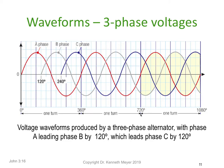Looking at another turn — 720 degrees, the machine turned around twice — A phase has gone through another whole turn, B phase has gone through one and two thirds, and C phase has gone through one and a third. Once we go through three turns, A, B, and C have all been through their appropriate full rotation. So the voltage waveforms produced by a three-phase alternator have A leading B by 120 degrees, which leads C phase by 120 degrees.